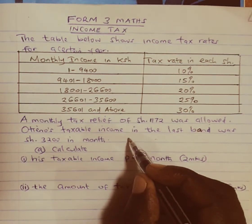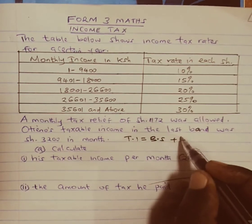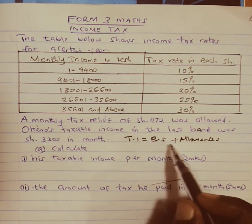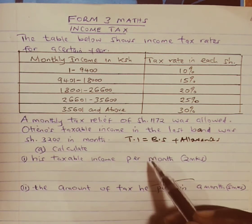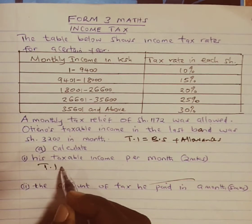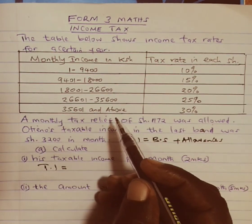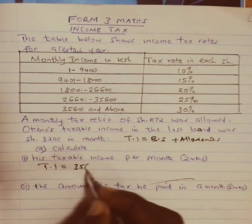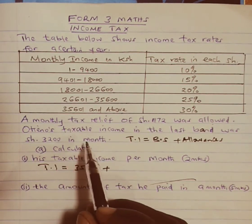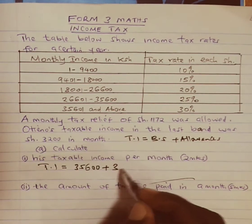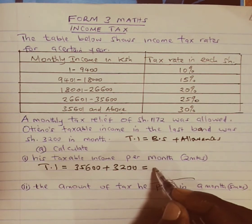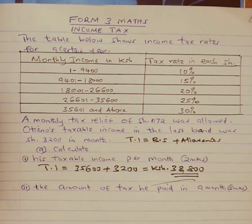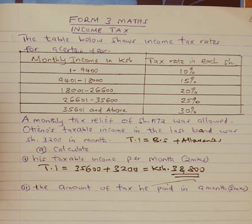We know that to get taxable income, we always take the basic salary and add all the allowances. But in this case, we have not been given the basic salary nor the allowances. To get taxable income here, we take the maximum amount before the last bracket, which is 35,600, and add the taxable income in the last bracket, which is 3,200. This gives us Kenyan shillings 38,800 — the taxable income for Otieno per month.